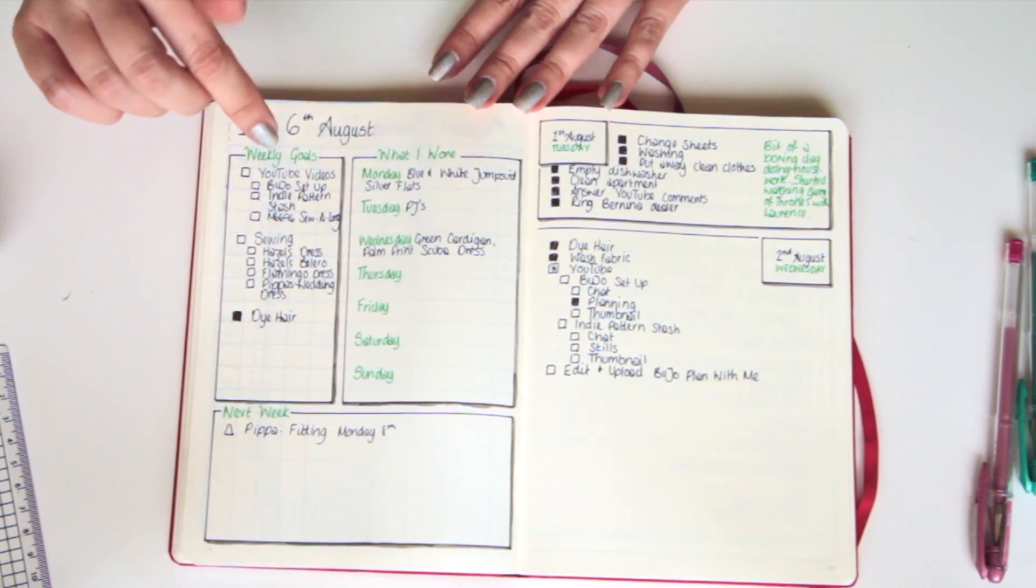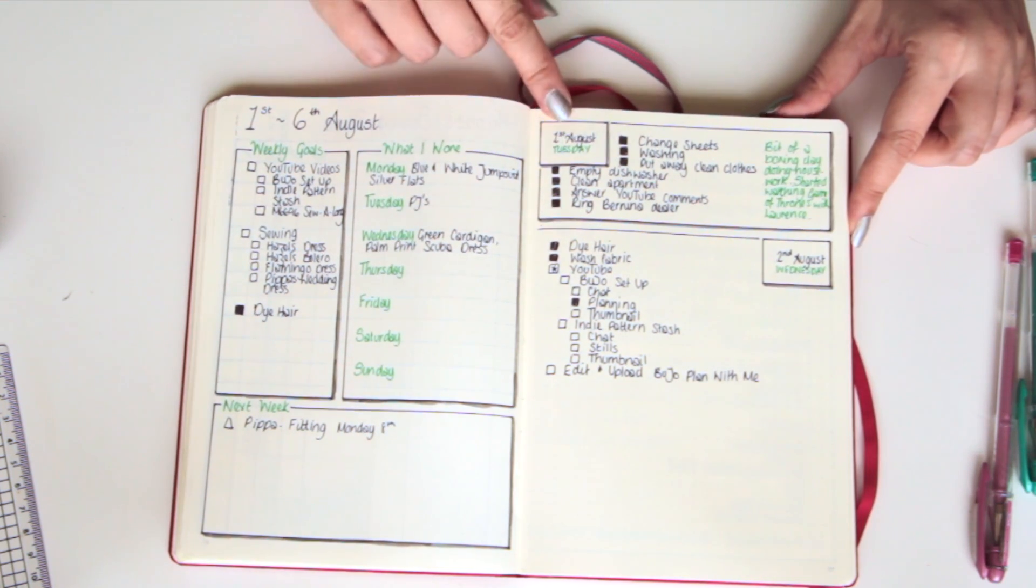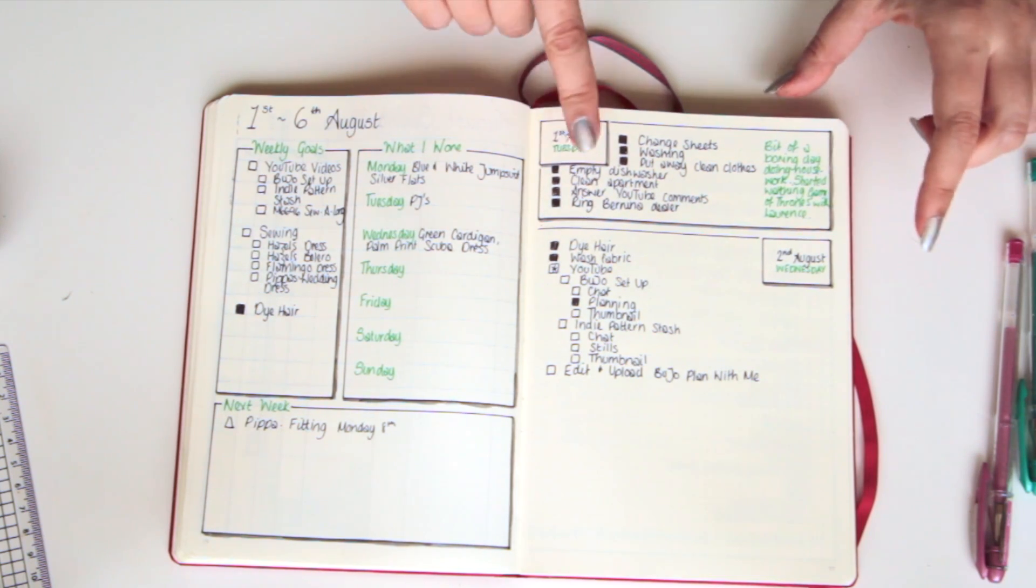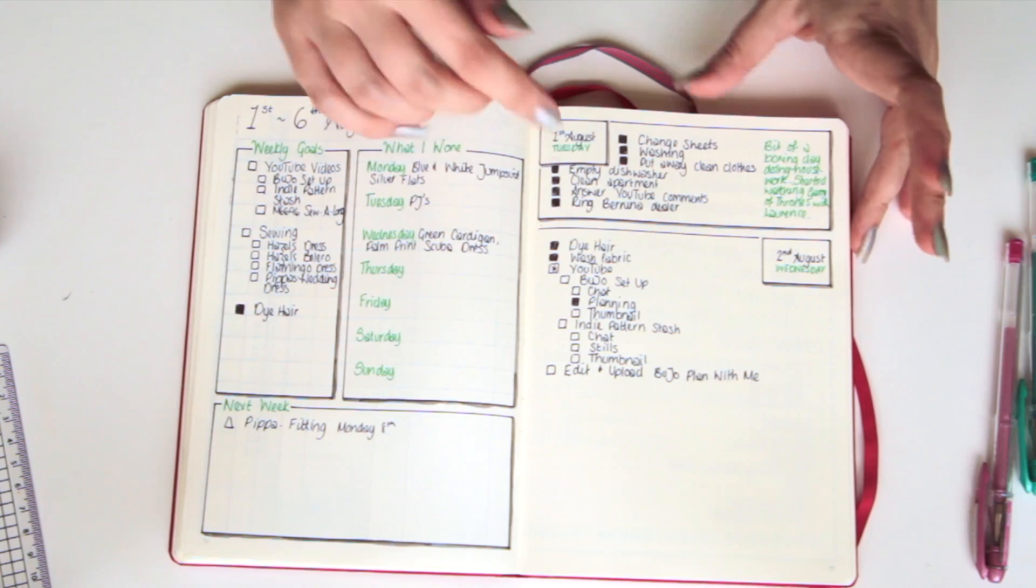But yeah, so this is an overview of everything that I finished today. So we've got the weekly goals, the what I wore, the next week section, and then my dailies. I tend to only draw the box in once I have completed the day and that way I know how big the box needs to be, because sometimes they're huge, sometimes they're small.